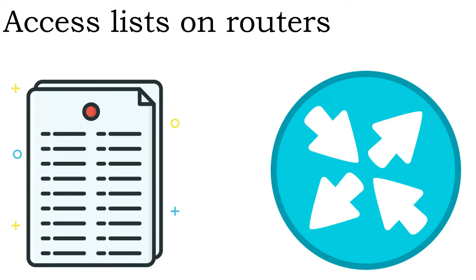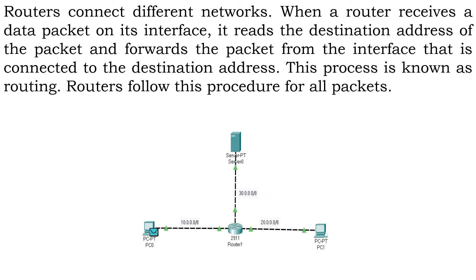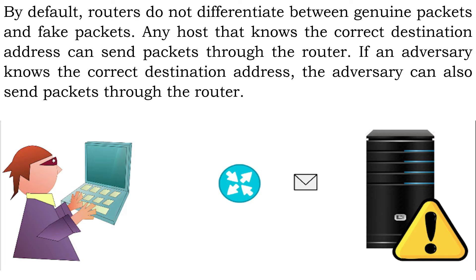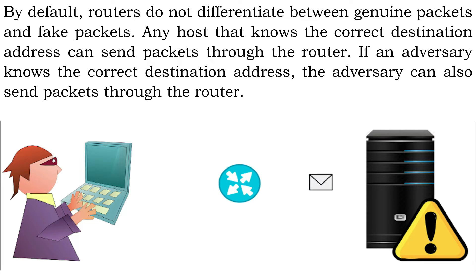Access Lists work on routers. Routers connect different networks. When a router receives a data packet on its interface, it reads the destination address of the packet and forwards the packet from the interface that is connected to the destination address. This process is known as routing. Routers follow this procedure for all packets. By default, routers do not differentiate between genuine packets and fake packets. Any host that knows the correct destination address can send packets through the router. If an adversary knows the correct destination address, the adversary can also send packets through the router.